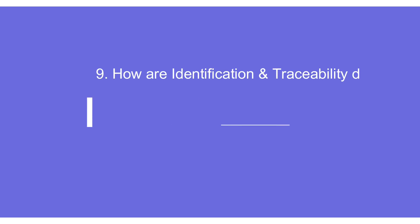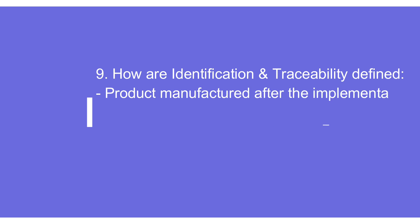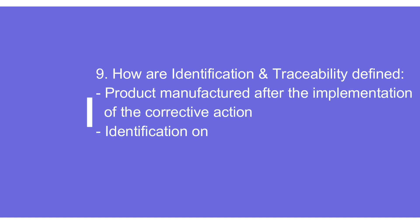Point number nine is about identification and traceability of material made after the modification of process parameters and fixtures. It is important to have a proper identification mark on the old material so the customer knows, for example, that 5,000 pieces need to be consumed before the new material arrives. When the new material comes, there should be a new coding — a green or red color, shipping document number, date, and ASR number — providing a clear demarcation between old and new material.